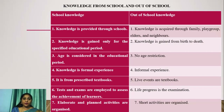Knowledge from school and out of school: Students gain knowledge from school as well as from outside school. School knowledge is provided in and through schools. Knowledge is gained only for the specified educational period, where age is considered. In school knowledge, knowledge is a formal experience gained from prescribed books.